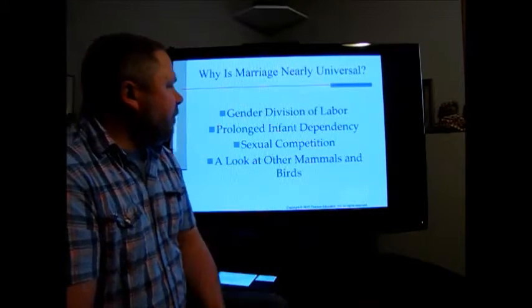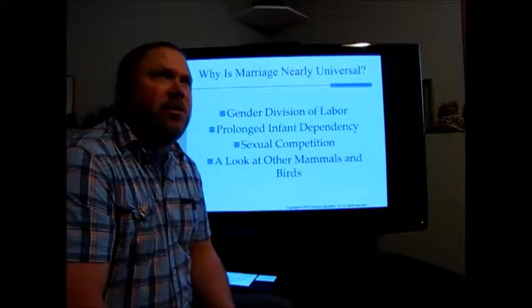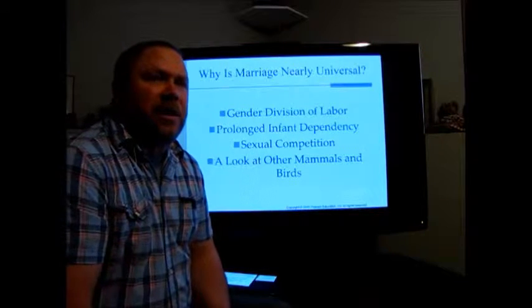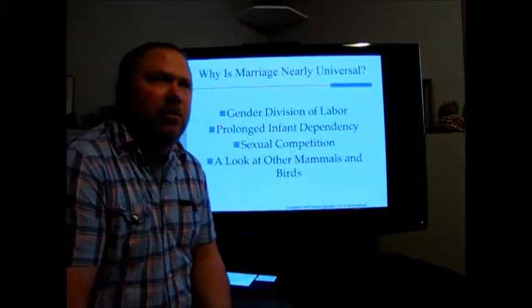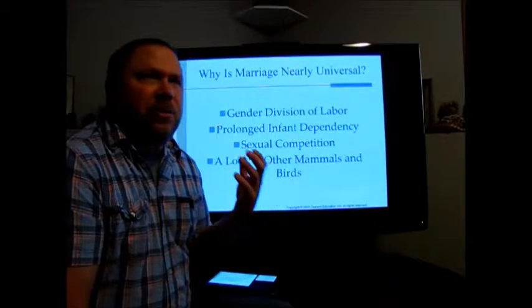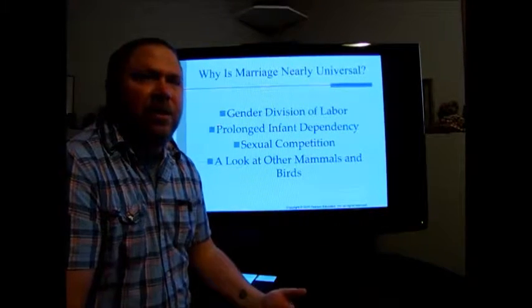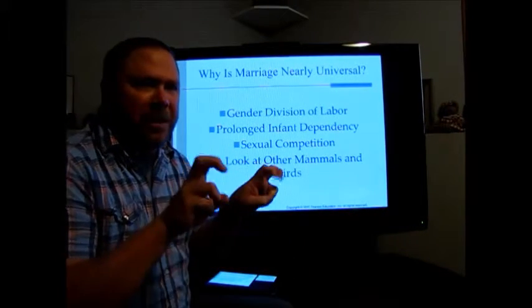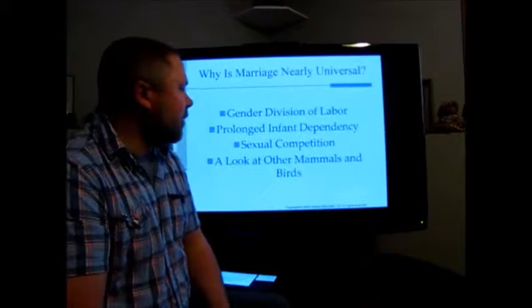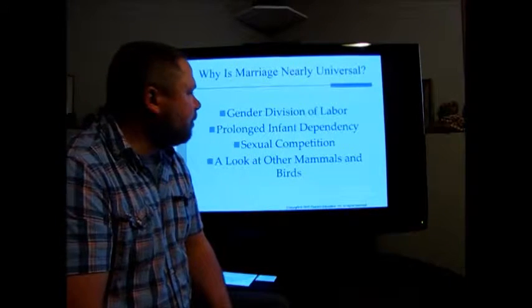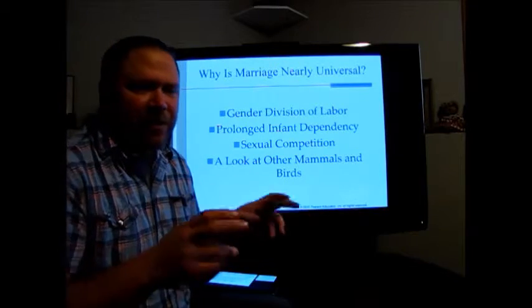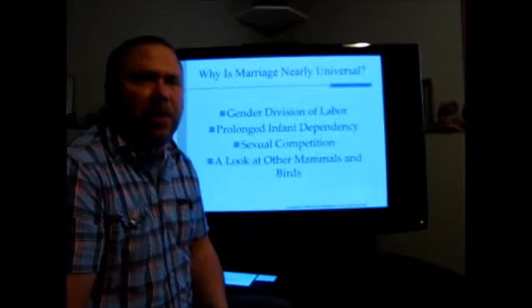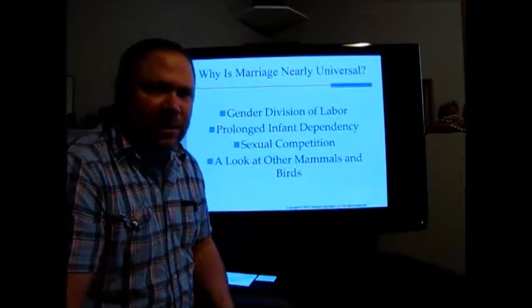Finally, we can look at other mammals and birds. The main thing to pick up here is that those other animals and birds whose females cannot provide for themselves and their babies at the same time typically have stable mating partners — essentially marriage — so that the male of the species can help the female take care of the offspring, which again leads to successful reproduction.